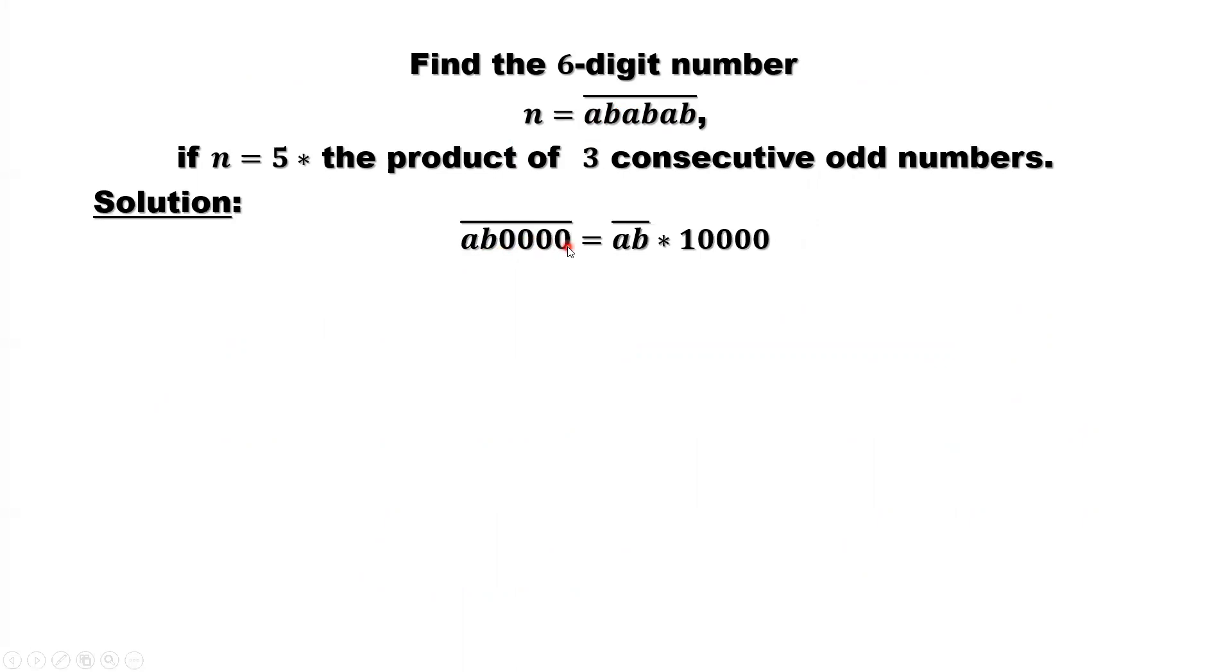AB0000 is equivalent to AB times 10,000. Now middle AB00 equals AB times 100. The last AB is AB times 1.